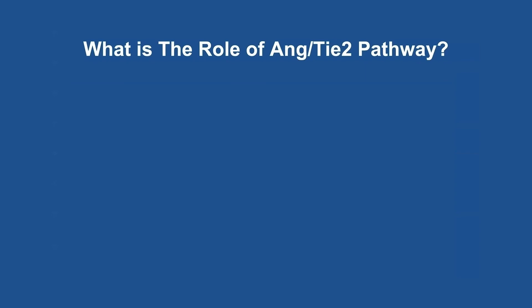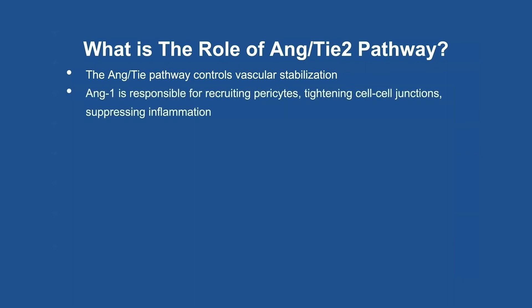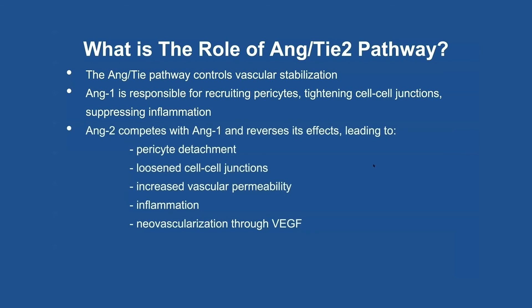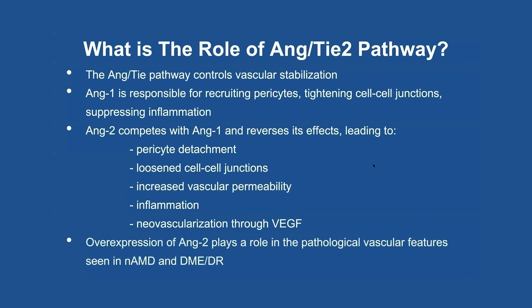In summary, this presentation reviewed the role of angiopoietin 1, angiopoietin 2, and TIE2 in vascular biology. Angiopoietin signaling controls vascular stabilization in the context of varying levels of VEGF-A. Angiopoietin 1 is responsible for recruiting pericytes, tightening cell-cell junctions, and suppressing inflammation, while ANG2 competes with ANG1 binding to TIE2 and reverses its effects, leading to pericyte dropout, loosened cell-cell junctions, increased vascular permeability, increased localized inflammation, and neovascularization. Overexpression of ANG2 plays a role in pathologic vascular features seen in neovascular AMD and diabetic retinopathy.